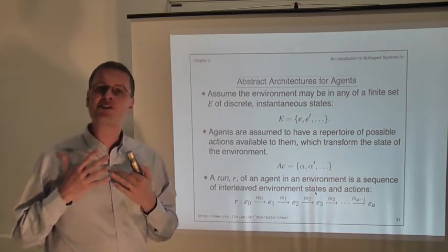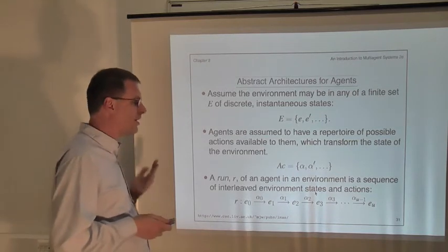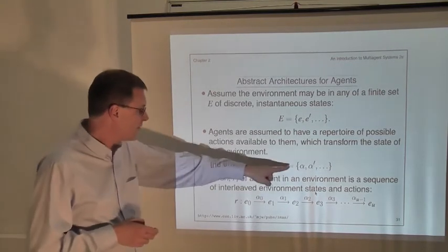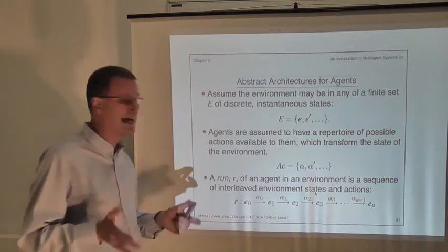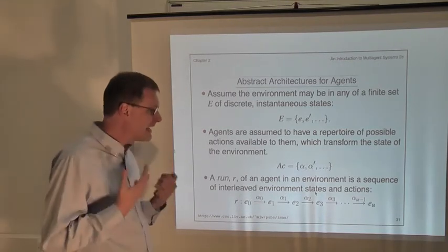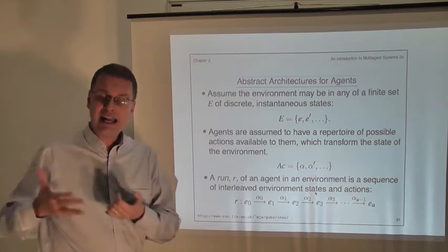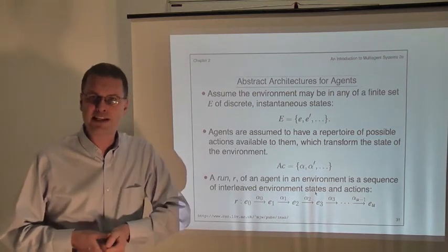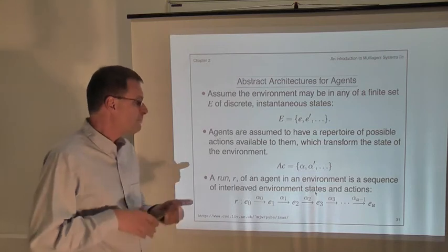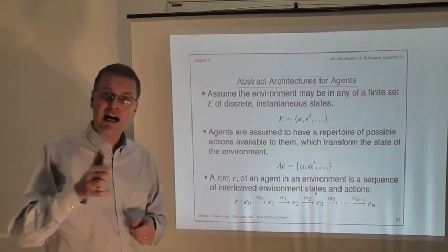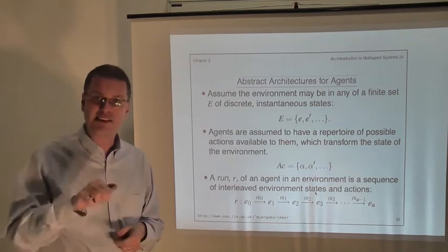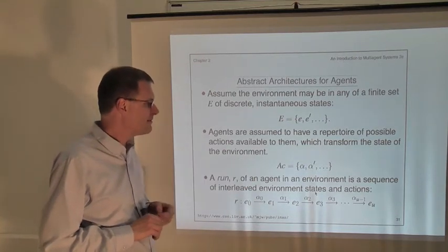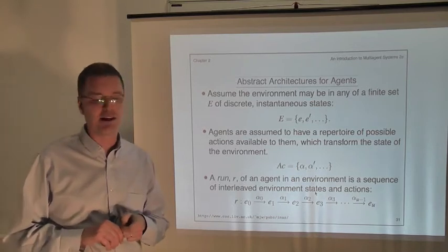Agents are things that do things to their environment, and to model what they're doing, we're going to have a set AC of possible actions. The members of this set AC we denote by alpha, alpha prime, alpha one, and so on. We're not worrying about exactly what those actions are. In a software environment, these actions could be removing files, moving a file from one place to another, or processing a file in some way. If the environment was a physical environment, they could be actuator actions — a robot picking something up and moving it around. We'll just assume there is this set AC of actions that our agent can perform.